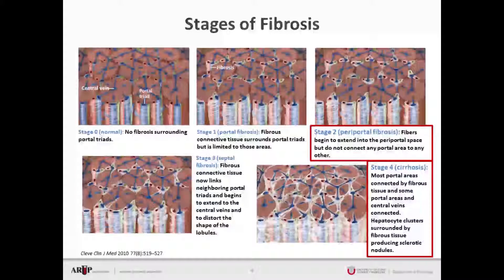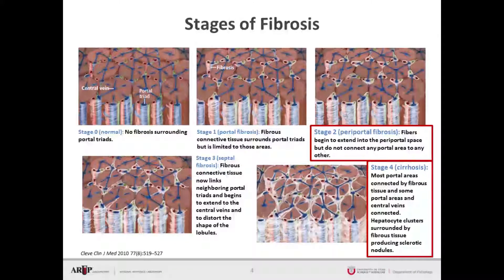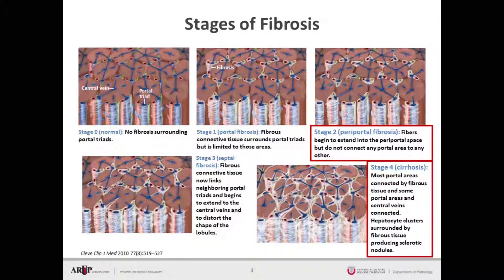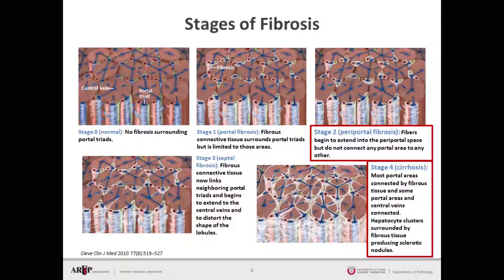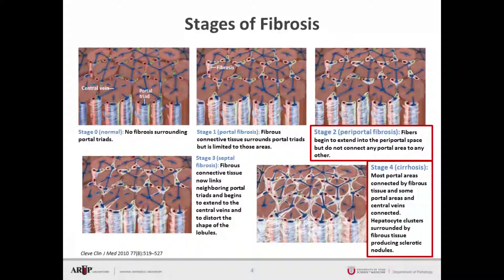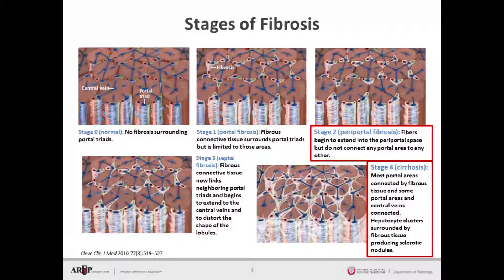There are several stages to fibrosis. The typical and distinctive architecture in the liver — the one structure that is very unique to the liver — is the portal triad, as illustrated here, which is composed of an artery, vein, and bile duct. Fibrosis occurs between these triads, and stage one fibrosis, also known as portal fibrosis, is the development of fibrosis connective tissue that surrounds the portal triads, but is limited to those areas.